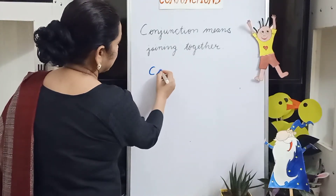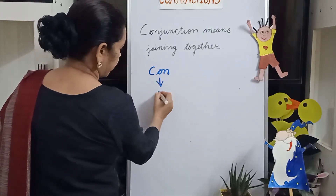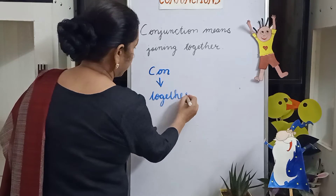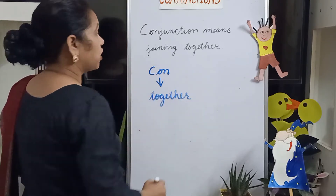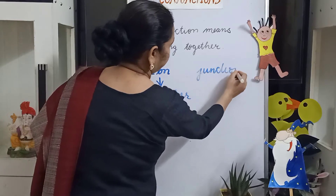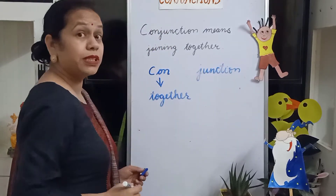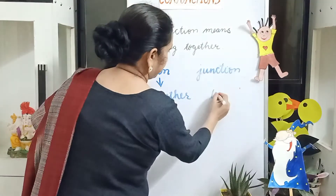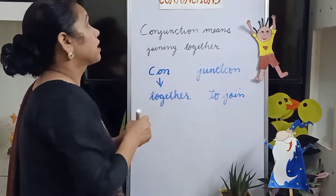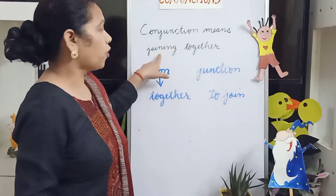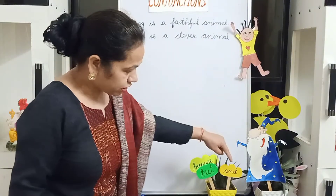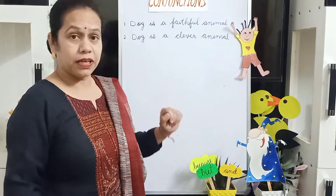Conjunction means joining together. 'Con' means together, and 'junction' means to join. So conjunction means joining together. In this video, we will learn conjunction 'and' and 'but.'